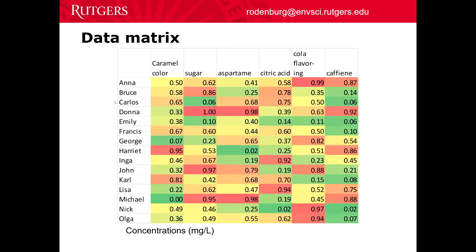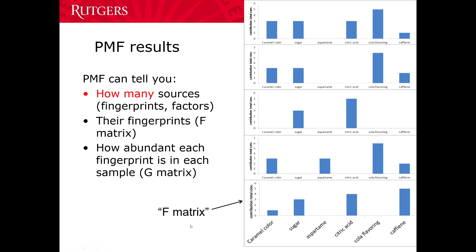You get a data matrix — a bunch of drinks consumed by a bunch of different people, with the six different analytes you measured and all of their concentrations, let's say in milligrams per liter. You could submit this data matrix to the PMF program, and it would spit out results. The first set of results is what we call the F matrix — the abundance of each of your six analytes in a certain number of factors. Let's say you've determined that the correct number of factors is five. The G matrix shows how abundant each fingerprint is in each sample.